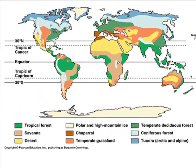Looking at the planet as a whole, we can identify about nine major types of biomes. You can break these down further into smaller pieces, but these are the nine major ones — including tropical rainforests, savannah, grasslands, and more — and we can see how they're distributed across the planet.